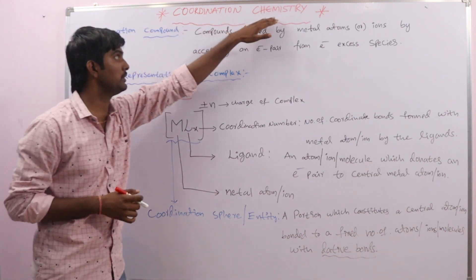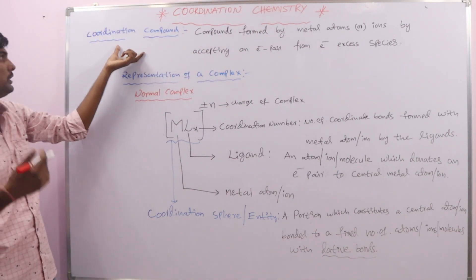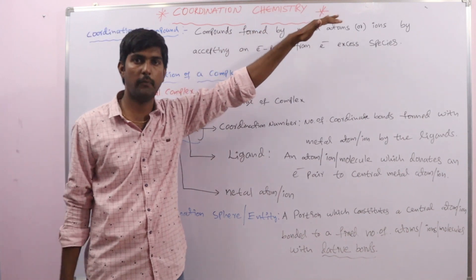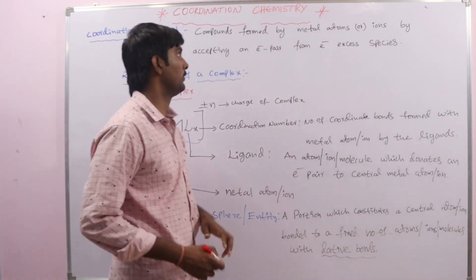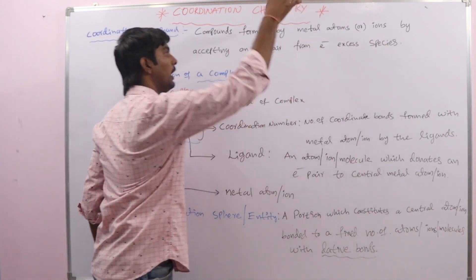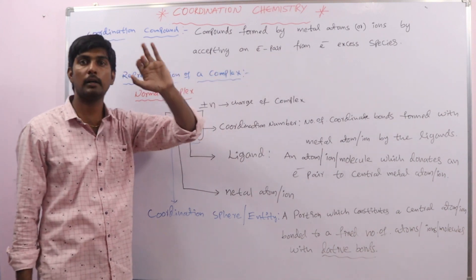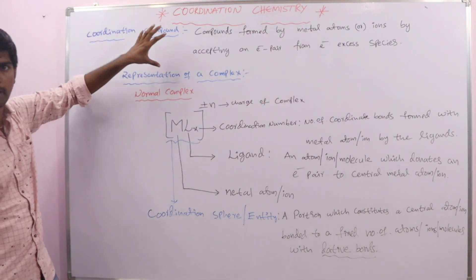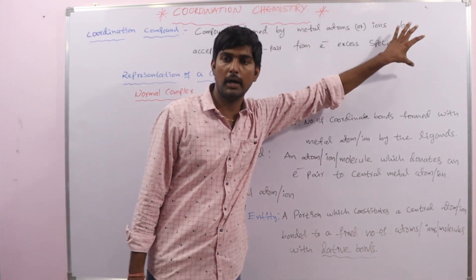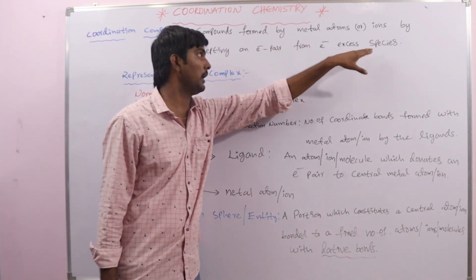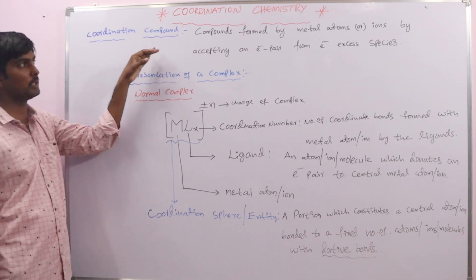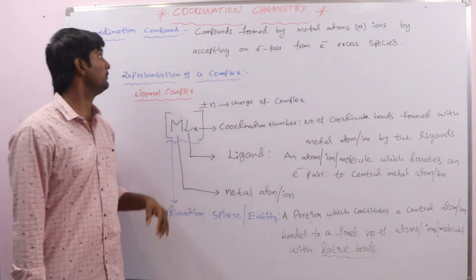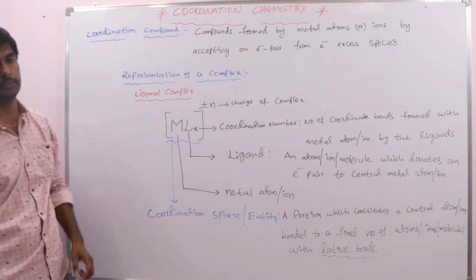Now let us start. What is the coordination compound? Coordination chemistry deals with coordination compounds or coordination complexes and their properties. A coordination compound is a compound which is formed by metal atoms or ions by accepting an electron pair from electron-excess or electron-rich species. Generally, coordination compounds are majorly formed by the D-block elements and F-block elements.